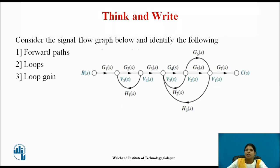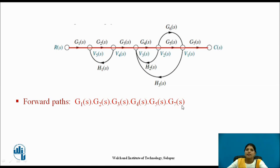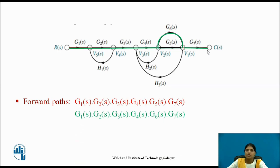Now consider one example: given a signal flow graph, identify the forward paths, loops, and loop gains. Here r(s) is the input node and c(s) is the output node. The first forward path is g1·g2·g3·g4·g5·g7, and the second forward path is g1·g2·g3·g4·g6·g7. So there are two forward paths.